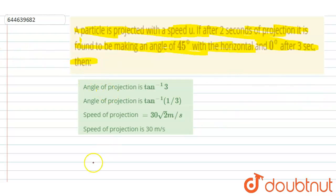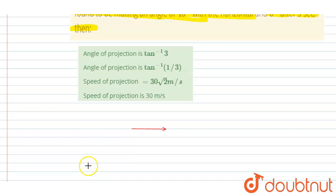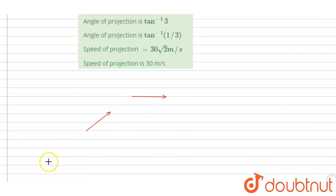So let's say I projected a particle, and after 3 seconds its velocity is making 0 degrees, and after 2 seconds it is at an angle of 45 degrees, and I projected it at an angle theta like this.